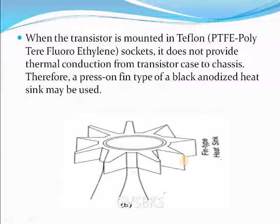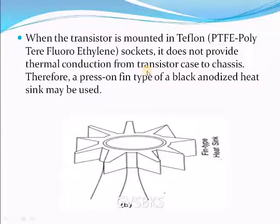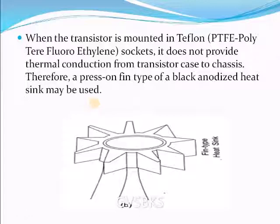Another type of heat sink is the fin type or circular heat sink. Generally we use rectangular heat sink, but a circular type is also used. When the transistor is mounted in Teflon sockets, it does not provide thermal conduction from transistor case to chassis. Therefore, a press-on fin type of black ionized heat sink may be used. This type of circular or fin type heat sinks are preferred when the transistor is mounted in a Teflon socket.